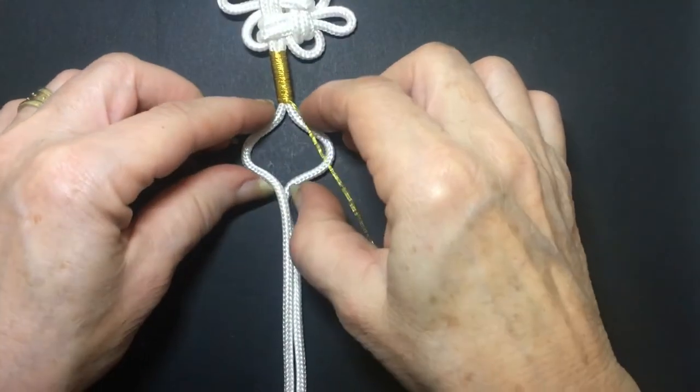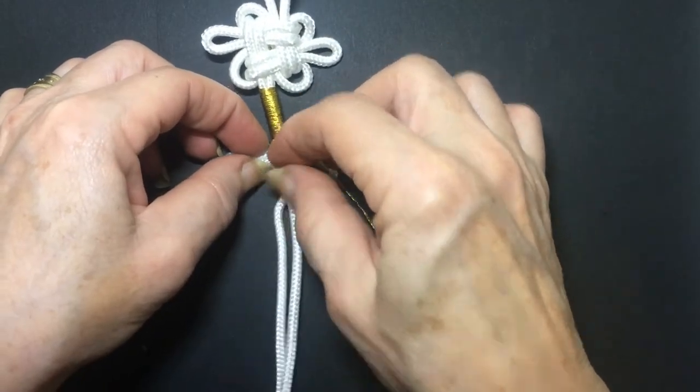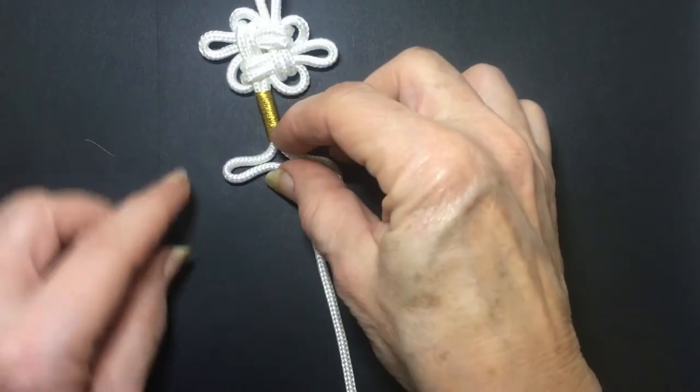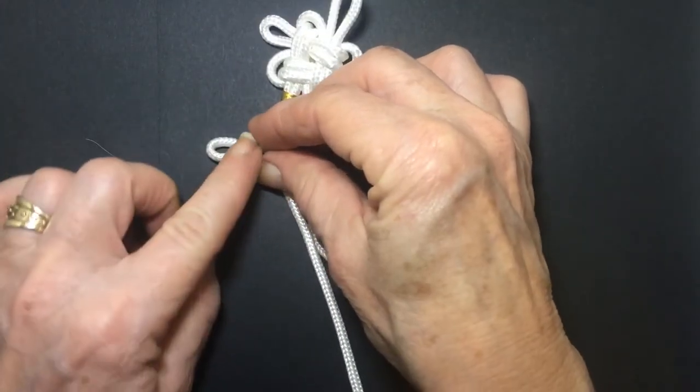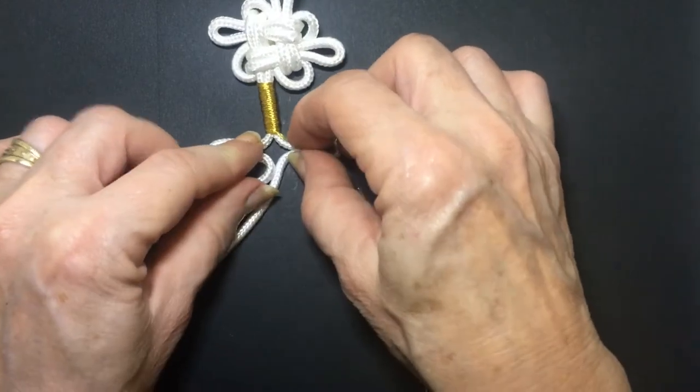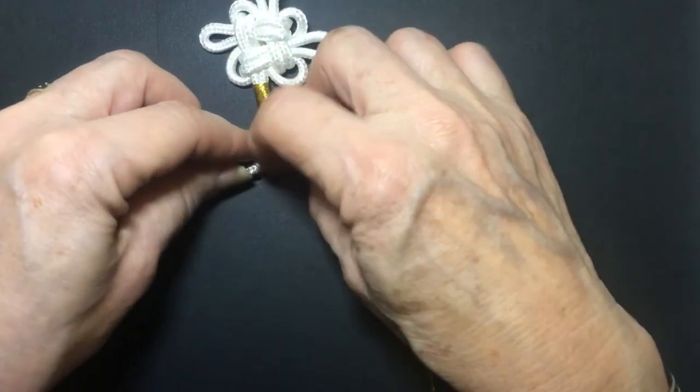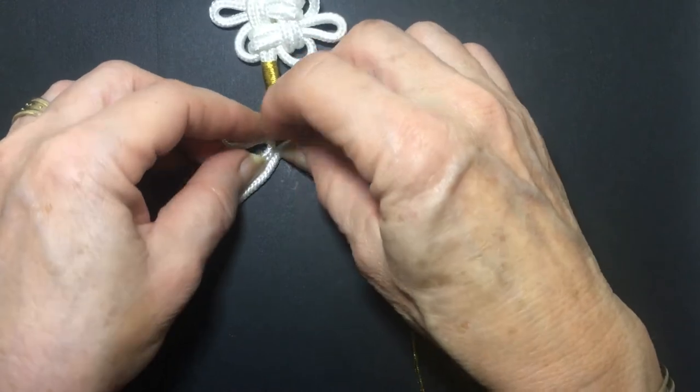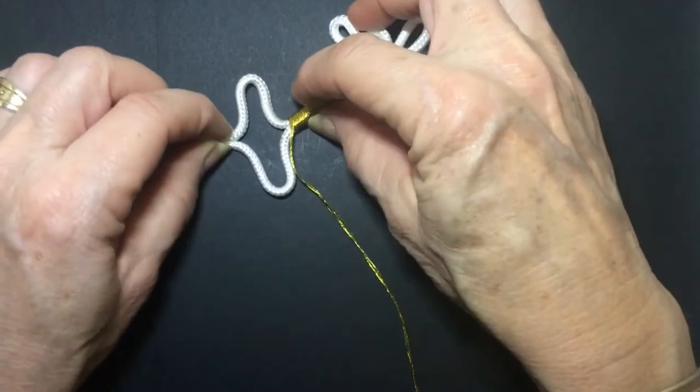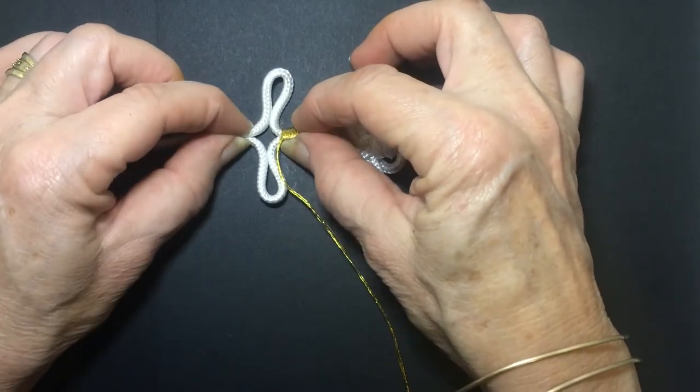So the little flower or petal that we're doing is going to be two centimeters on either side. So two centimeters outside, two centimeters this side and you've got your decoration.